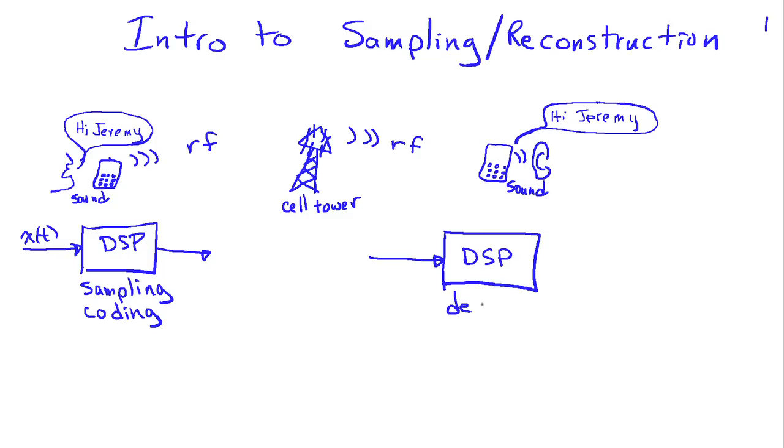Then there's a decoding process which undoes the effect of the coding here. And then we take those samples and we're going to reconstruct a continuous time signal which represents the sound for the user.